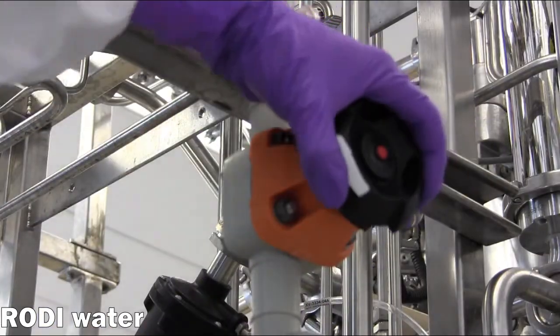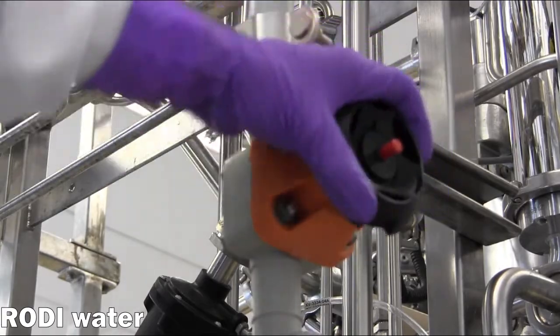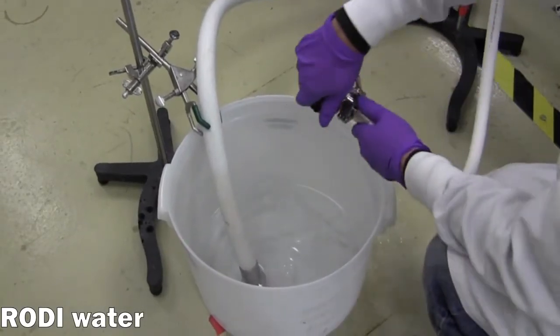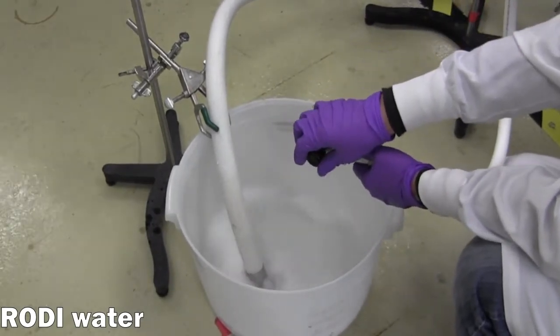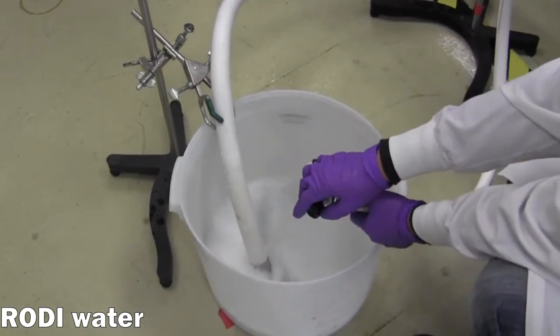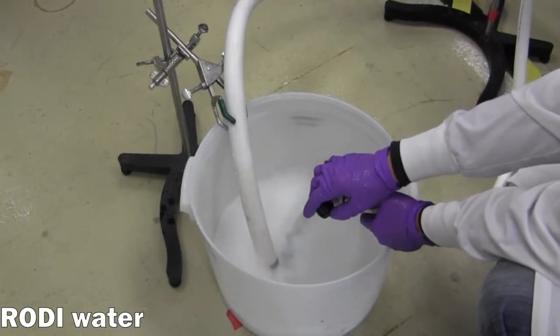Next, the supply valve for the RO-D water is opened. An RO-D water hose is used to supply water for priming and cleaning tasks throughout the operation. Here, a bucket is filled with water that will be used in subsequent steps.